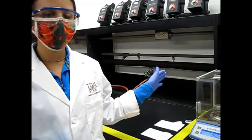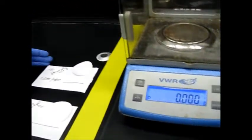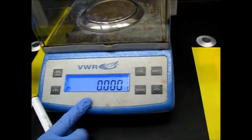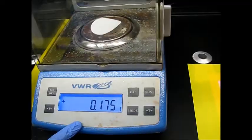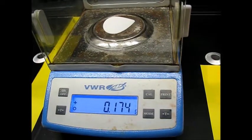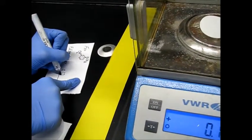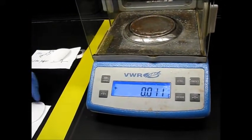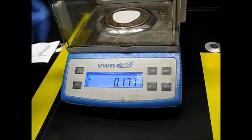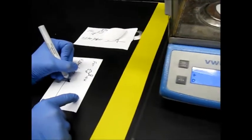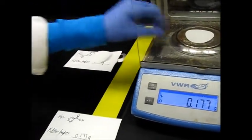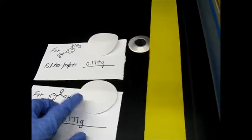So now we will use the balance to weigh out the filter paper that we will be using for the vacuum filtration. For the nitroaniline this is going to be our filter paper. Make sure that it's at zero. Open the glass and place the filter paper directly on the balance. We will record to three decimal places. And do the same thing with the benzoic acid. So here we have pre-weighed filter paper.